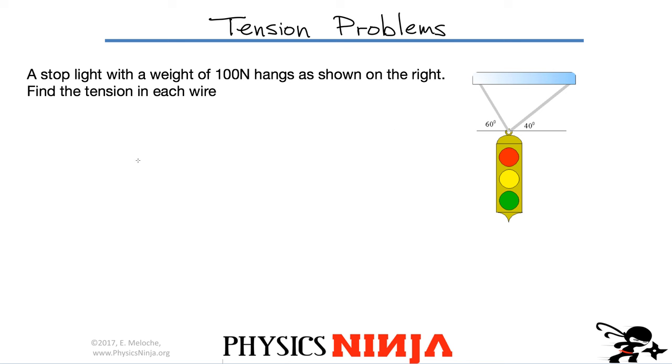Here's the problem. We have a stoplight, 100 newtons. I want to find the tension on each side. The angles are different on each side. So we start off. If it's not moving, it's in equilibrium, which means that the sum of the forces, and that's a vector, have to be equal to zero.